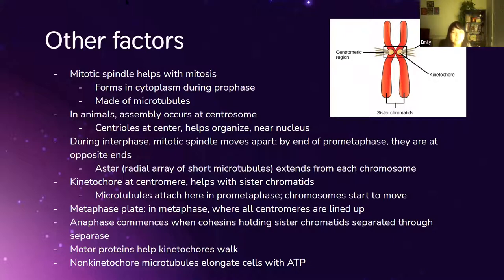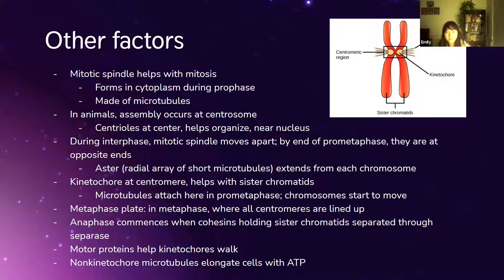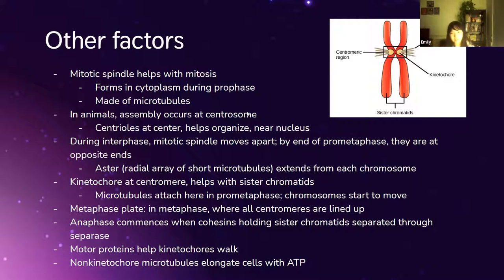The mitotic spindle helps with mitosis by pulling apart the replicated chromosomes. It's formed during prophase and is made out of microtubules. Microtubules are part of the cytoskeleton, which are elements of the cell that help it move. Centrosomes organize the mitotic spindles.